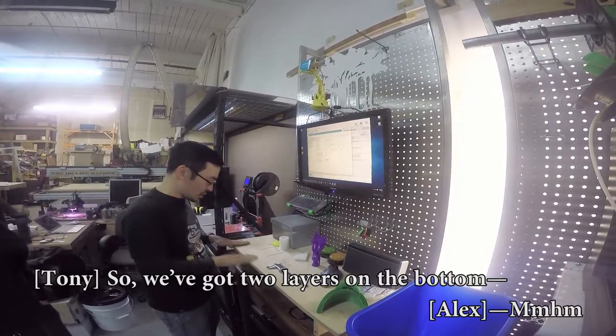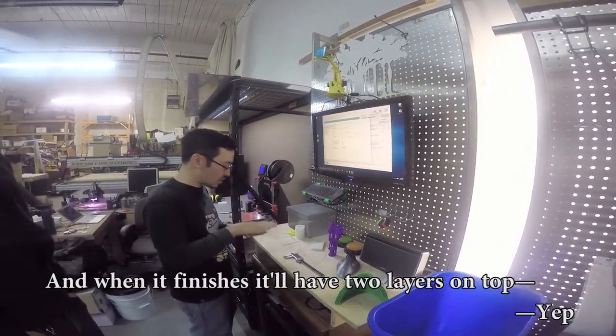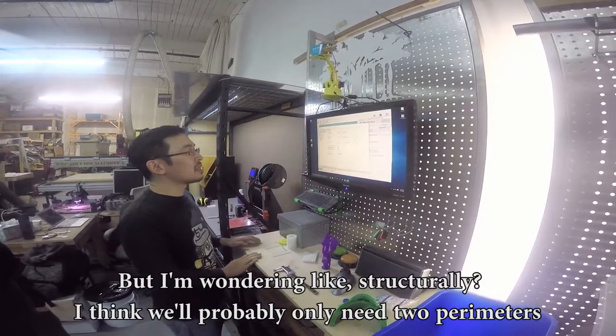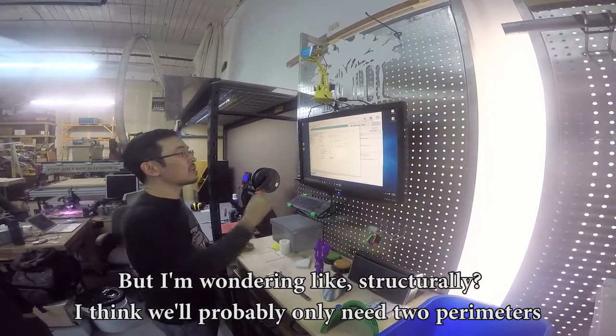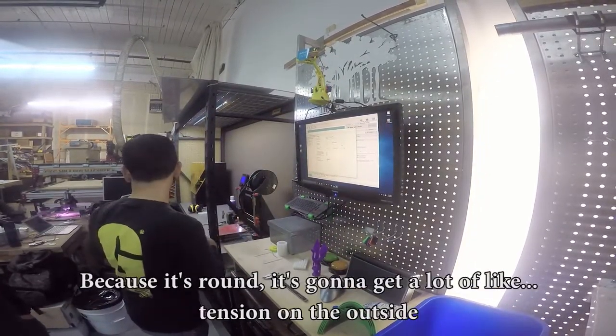We've got two layers on the bottom, and when it finishes it'll have two layers on top. But I'm wondering, structurally, I think we'll probably only need two perimeters because it's round.